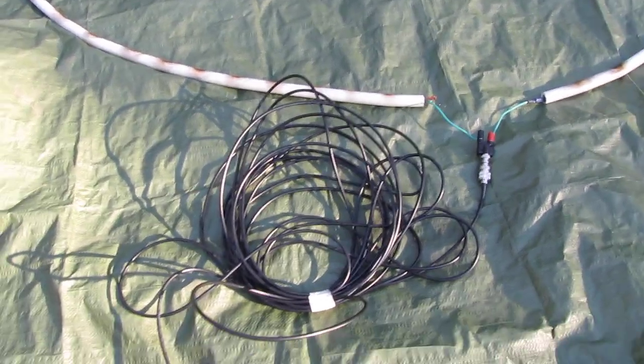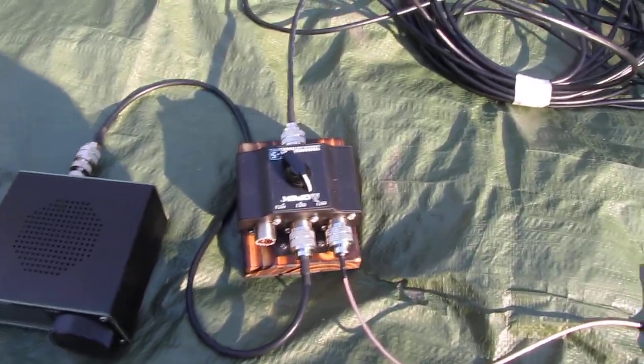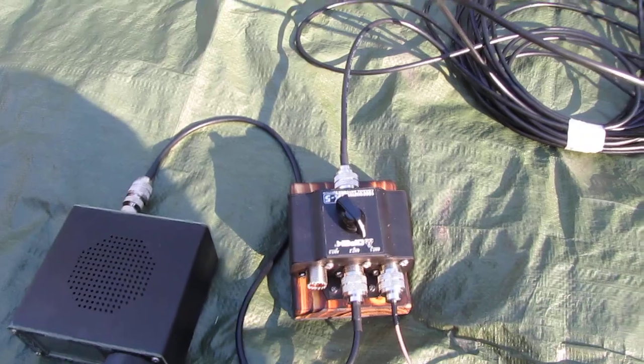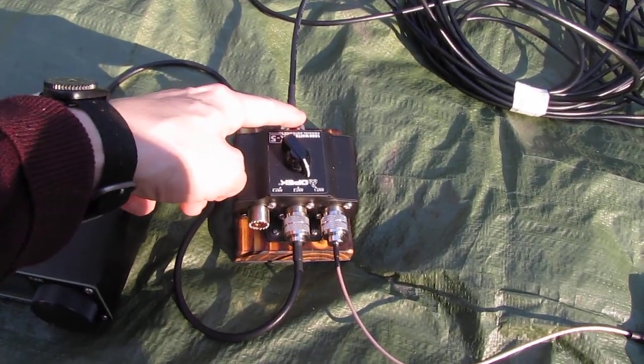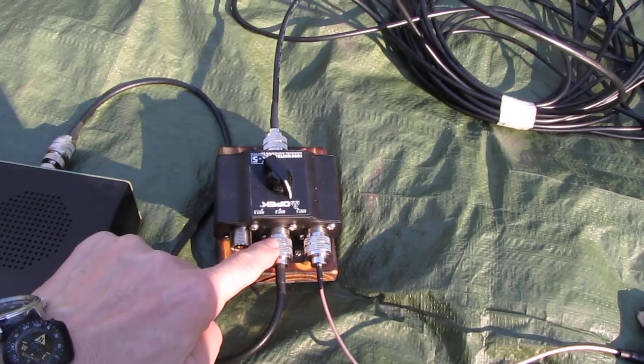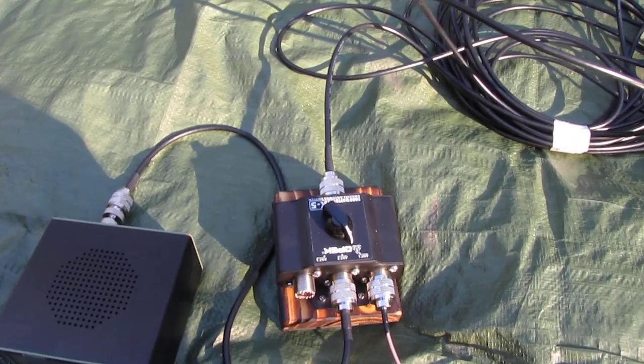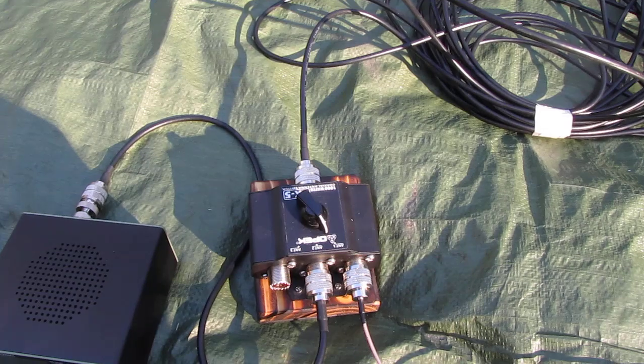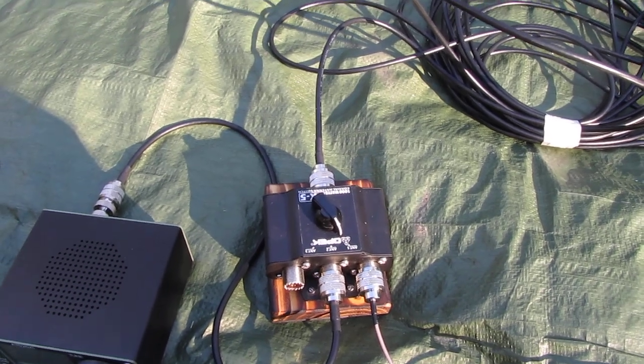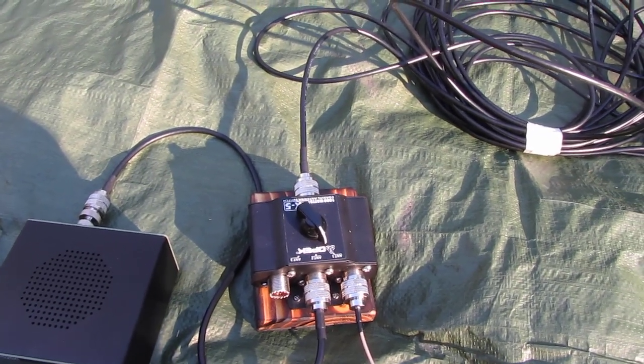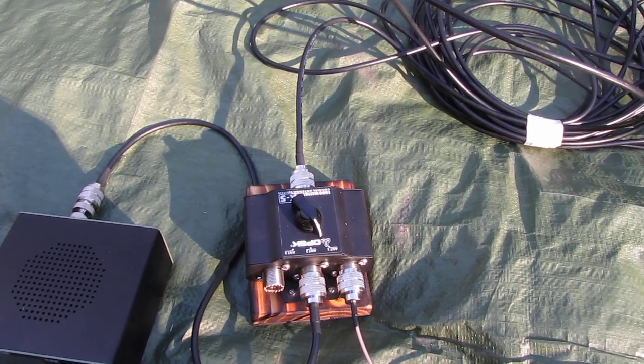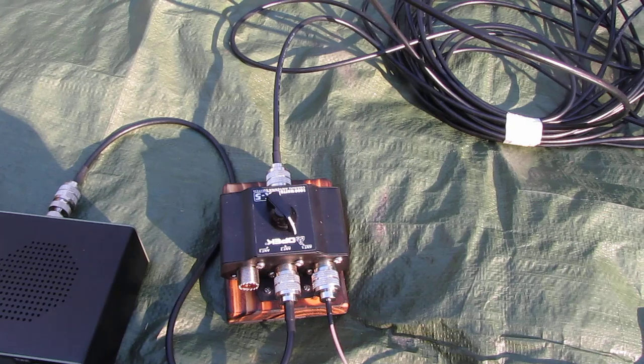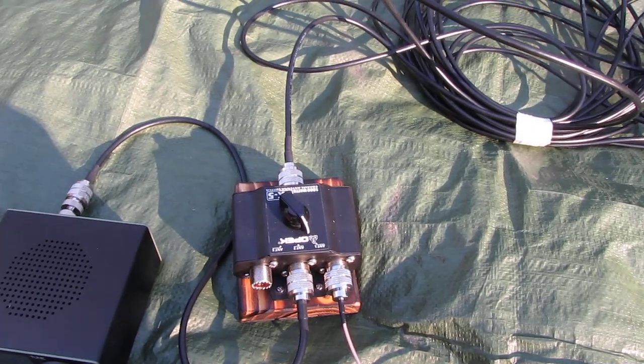And in my setup it goes to the antenna switch right there. In this case I put it up the opposite way, so with one input and two outputs for two different radios. But of course you can switch it around if you want to connect multiple antennas, up to three antennas with one radio. The video about that device is on my YouTube channel as well.